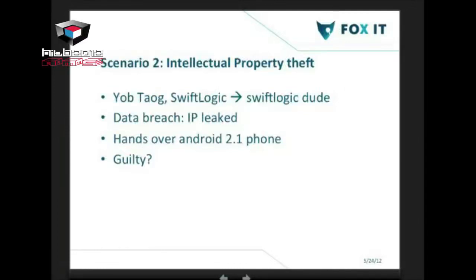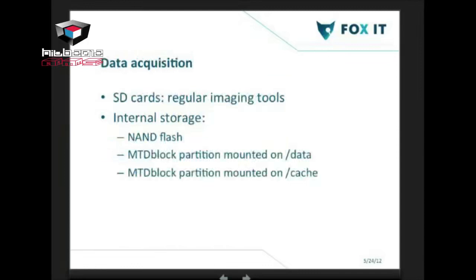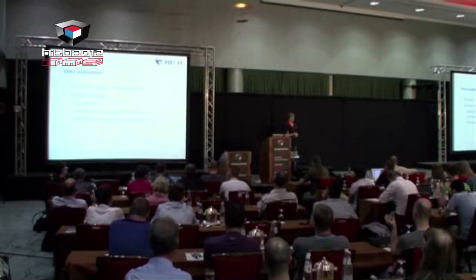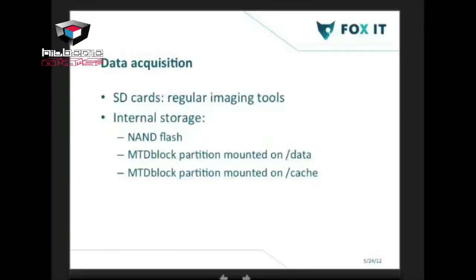The first thing you do when you get an Android phone as an investigator is perform data acquisition — you want to get the data out in a forensically sound manner. The interesting storage areas in a smartphone include the memory card, and the internal storage, which in most smartphones today is NAND flash storage with multiple partitions. For Android phones, the most interesting partitions are the cache partition and the user data partition where the user data is stored.